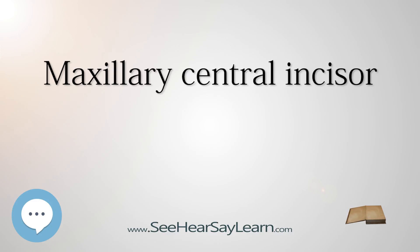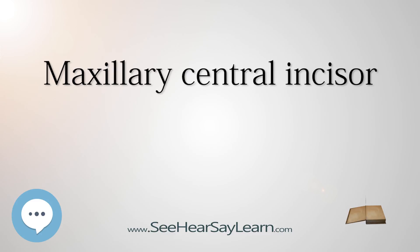Formation of these teeth begins at 14 weeks in utero for the deciduous, or baby, set and 3–4 months of age for the permanent set. There are some minor differences between the deciduous maxillary central incisor and that of the permanent maxillary central incisor. The deciduous tooth appears in the mouth at 8–12 months of age and is shed at 6–7 years, and is replaced by the permanent tooth around 7–8 years of age. The permanent tooth is larger and is longer than it is wide.